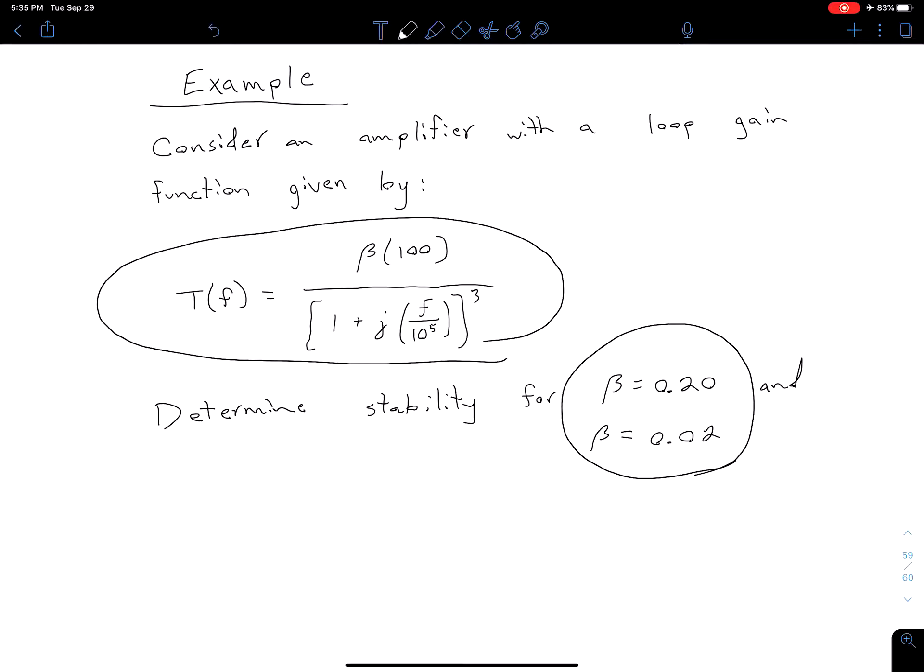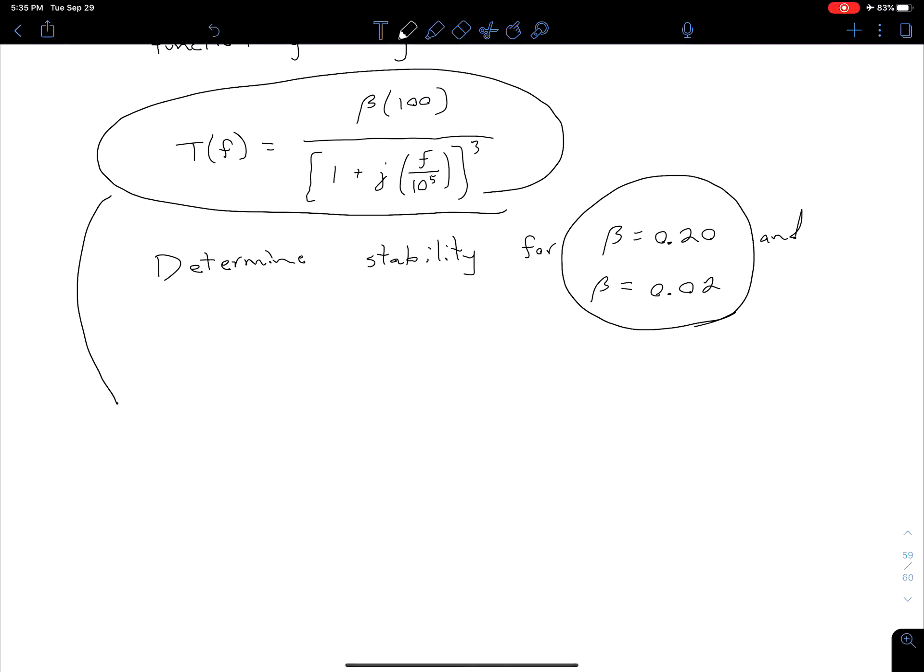So the first thing we want to do in this problem is express our loop gain in terms of the magnitude and the phase. Let's change this to T of f which equals our magnitude angle with our phase. The magnitude for our numerator is just going to be that beta times 100 and in our denominator we have a three pole system with a triple repeated pole, so we have three poles all at the same place. In this case our magnitude is just going to be this term for one pole and then we're going to cube that.